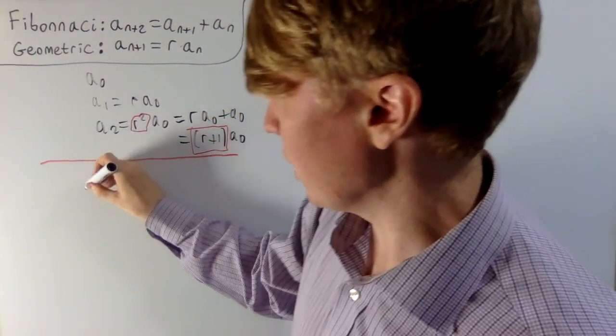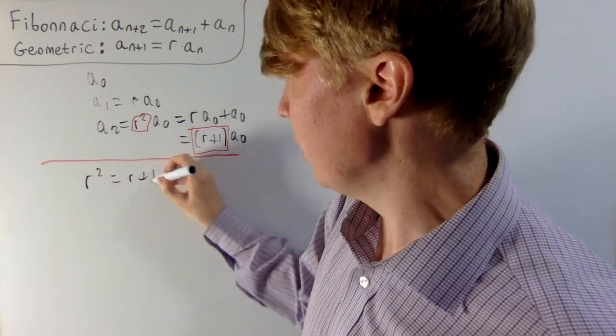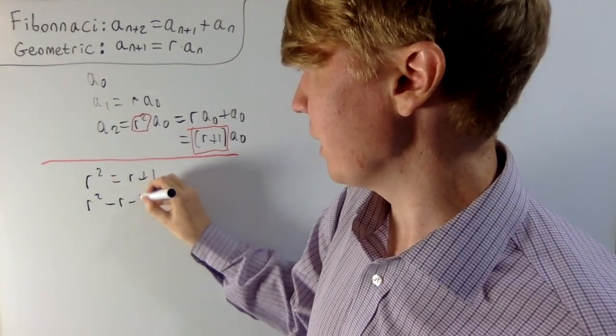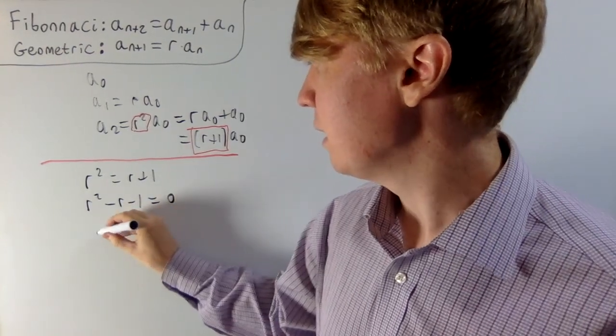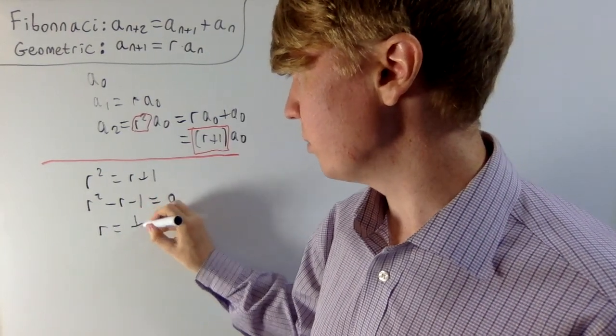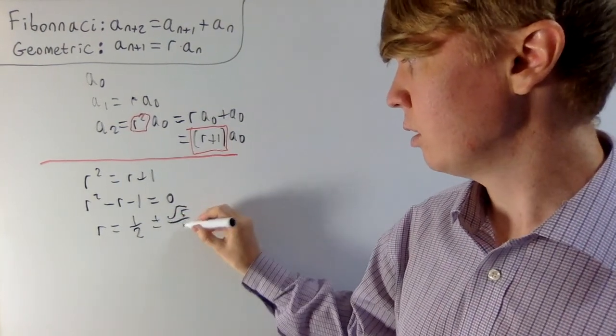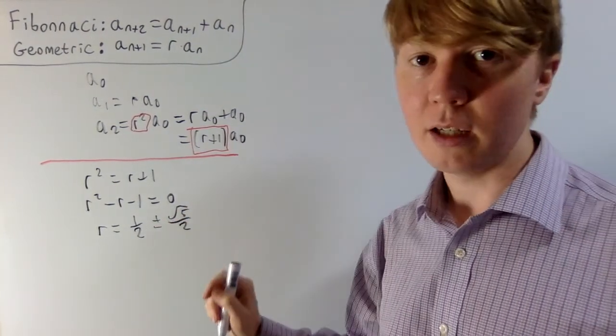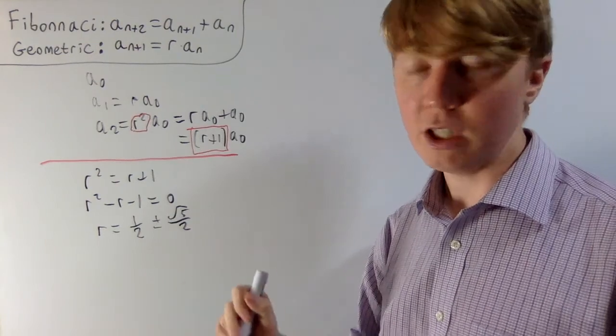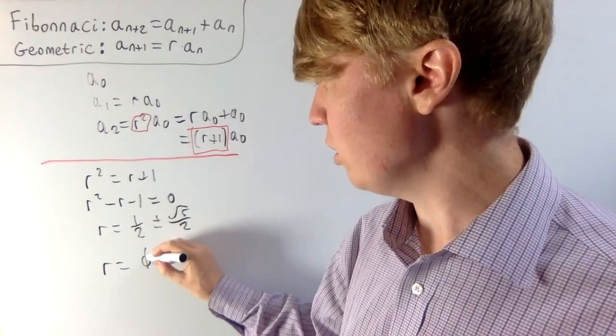So if you want to solve this, r squared equals r plus 1, just a simple quadratic, r squared minus r minus 1 equals 0. Put this into the quadratic formula, you get r as a half plus or minus root 5 over 2. And you may recognize the positive solution here as the golden ratio. So let's say here, r equals phi, the golden ratio.